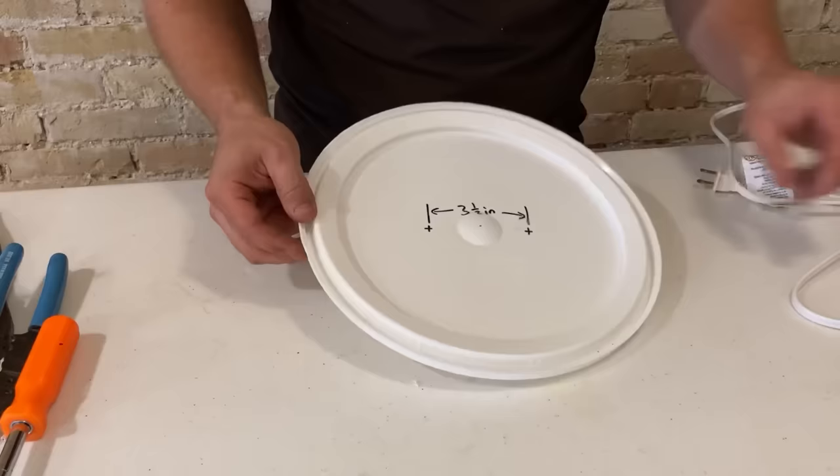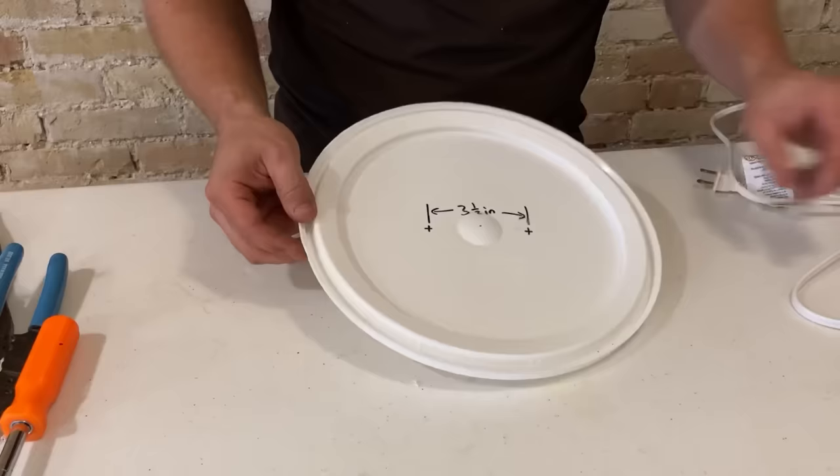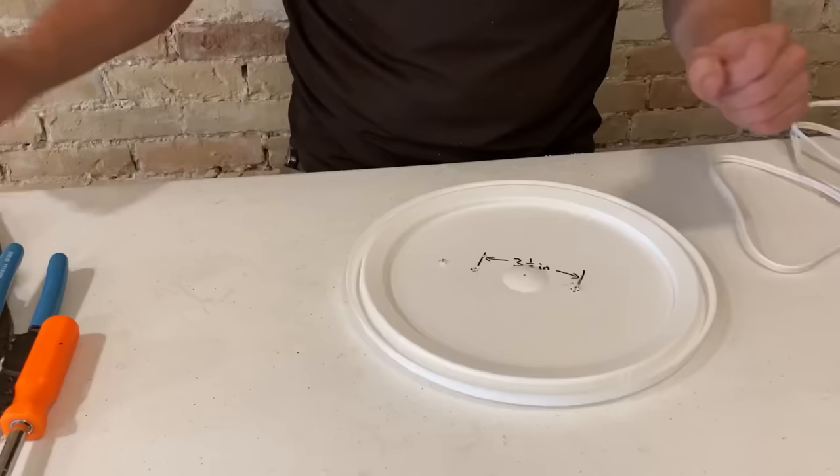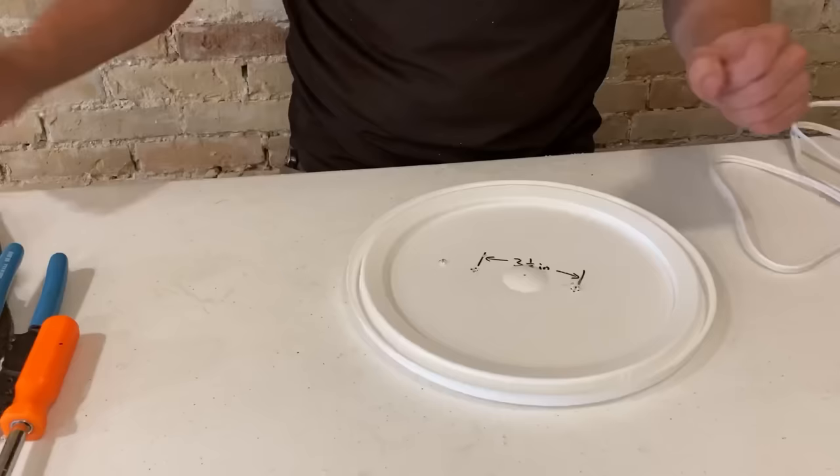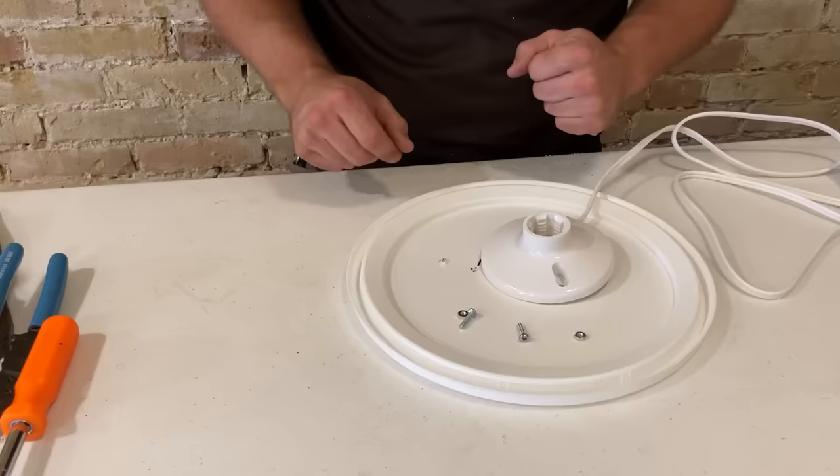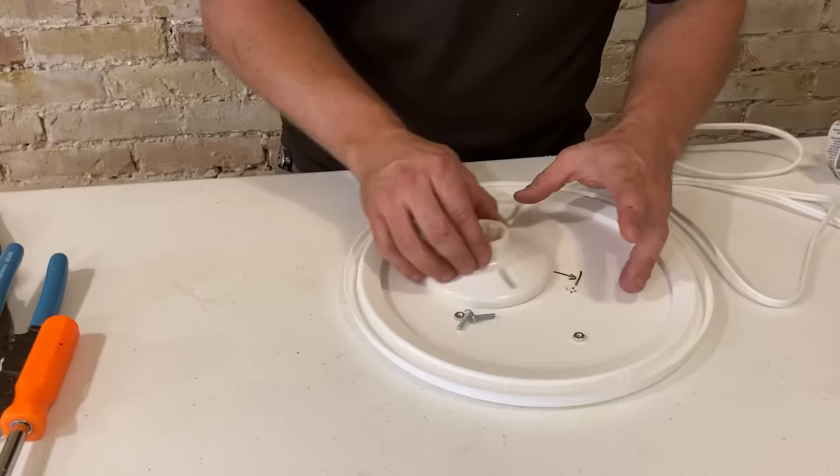Now for our pail lid, we're going to go ahead and mount our lamp base to the underside. In order to do that, we're going to have to drill two holes three and a half inches apart. Now I'm going to mount this using some three-quarter inch long eight-thirty-seconds bolts that I had in the shop. In order to do that, I'm going to pass the bolts from the top of the lid through to the underside, bolting the lamp base into place.